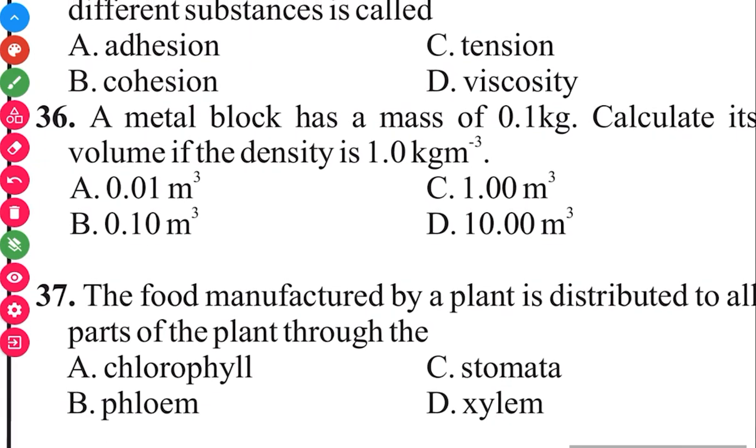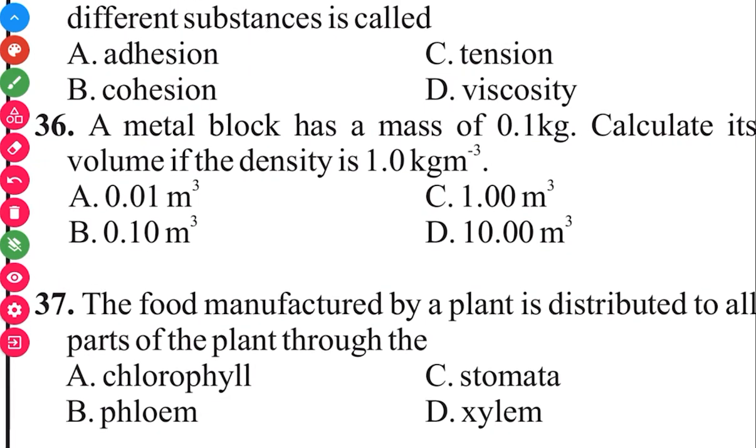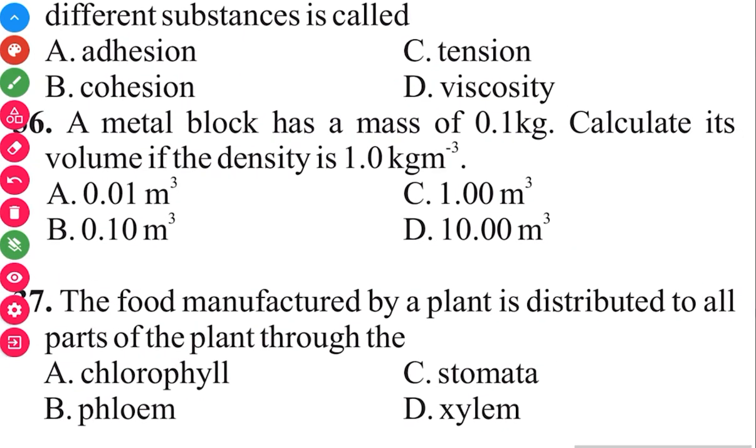The food manufactured by plants is distributed to all parts of the plant through the phloem. The answer in 3, 2, 1 is phloem.